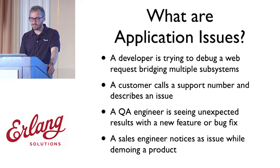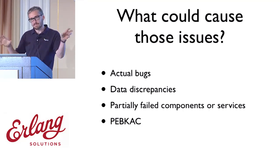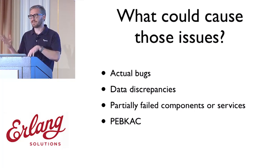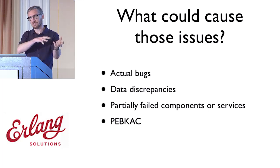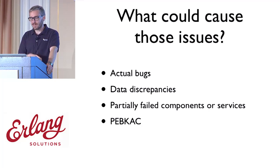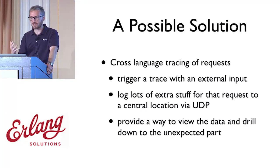There are a lot of things that can cause these issues. You can have actual bugs, but the biggest one we find is data discrepancies. With these complex systems, you're relying on different systems to push data here and there, and sometimes replication is behind, fails for one component, or a read from disk fails because that particular disk went into some bad mode. Or a service has partially failed in a way that's slightly working but not totally. Having come across this several times, I've arrived at a possible solution: cross-language tracing of specific requests.